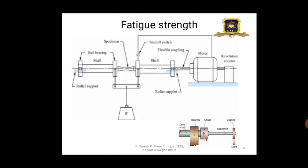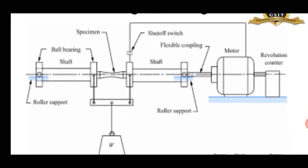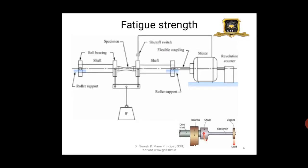Then you have fatigue testing to find out the fatigue strength. These tests are basically used to draw the S-N curve — that is, the stress versus number of cycles curve — to find out the fatigue strength of the material.